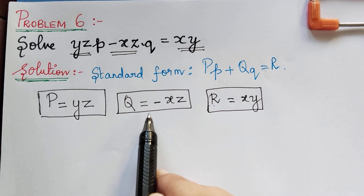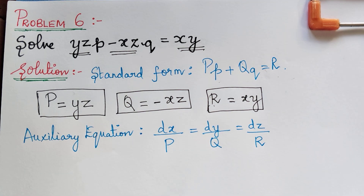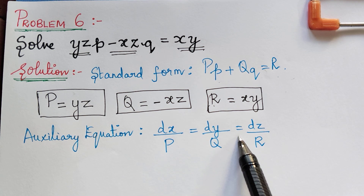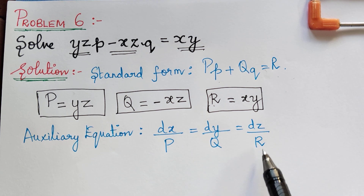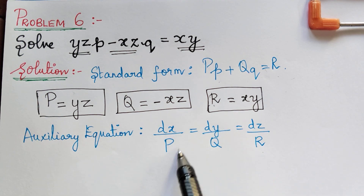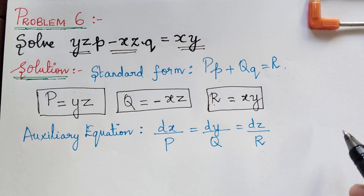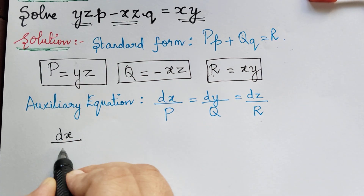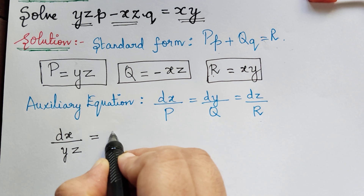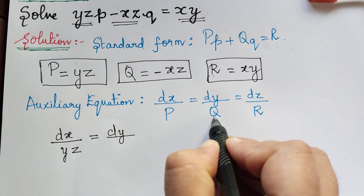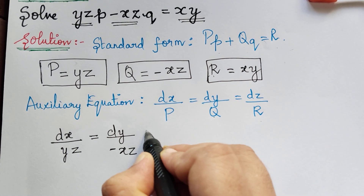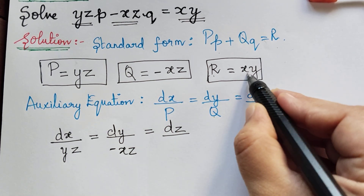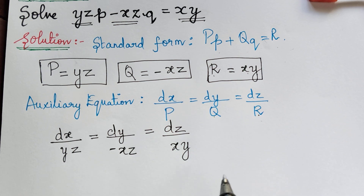The next step is to write the auxiliary equation. It is given by dx over capital P equals dy over capital Q equals dz over capital R. Substituting our values, the auxiliary equation becomes dx over yz equals dy over negative xz equals dz over xy.